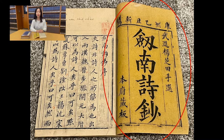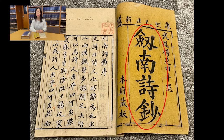From here, we could find out the publishing date, publisher, title, and more. In the middle of this page is the title of the book: Jiannan Shichao.